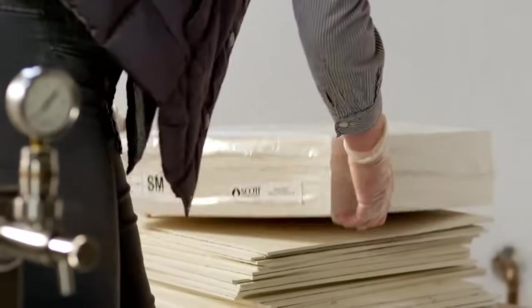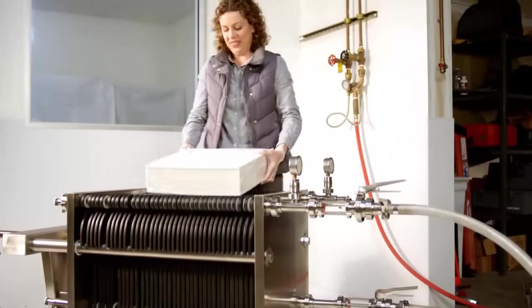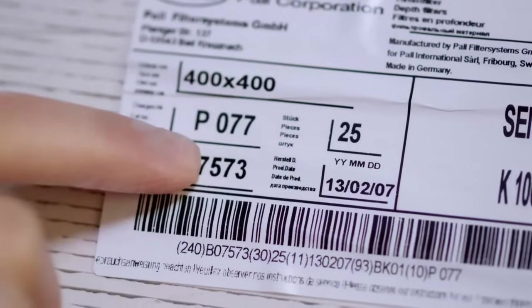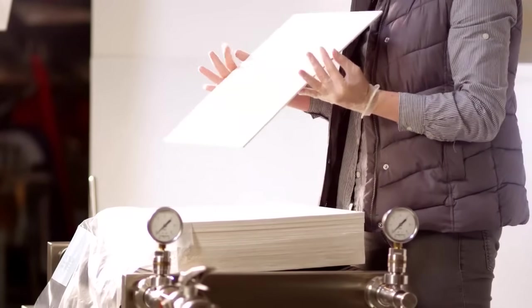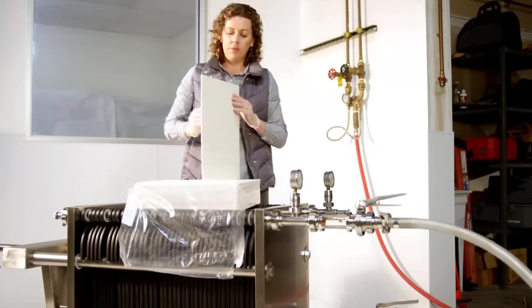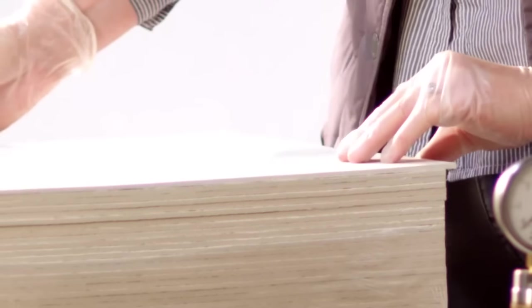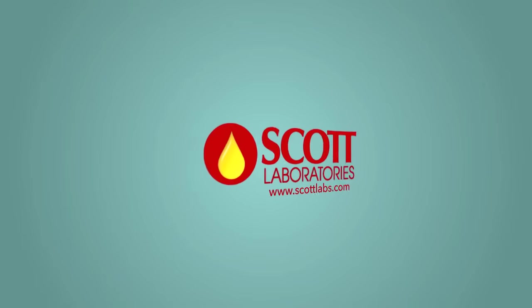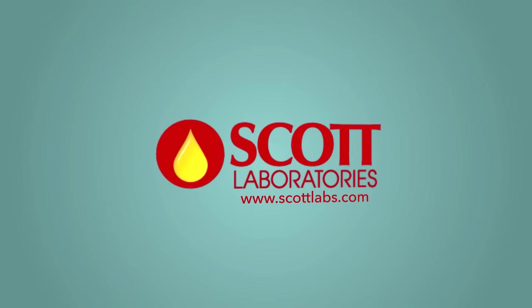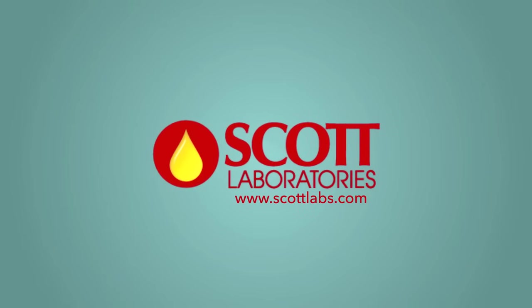Prior to filtration, grades should be selected and lot-specific data recorded from the PAC sticker for records. If for some reason the sticker is missing or illegible, the grade and lot number is also printed on the back of each filter sheet. For assistance in selecting the proper grade, please contact Scott Laboratories.